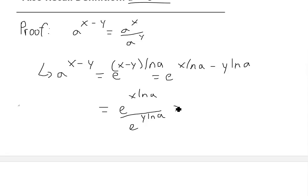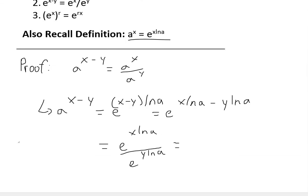And now this equals basically, if we recall this definition again, this is the exact same thing as the definition. This is e^(x ln a), that's just a^x. So this equals a^x right here. And now this is dividing by e^(y ln a), that's the same thing as this right here but with y instead of an x. So this just equals a^y right here.